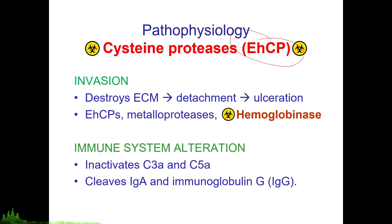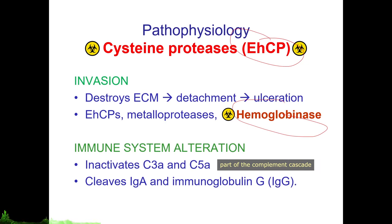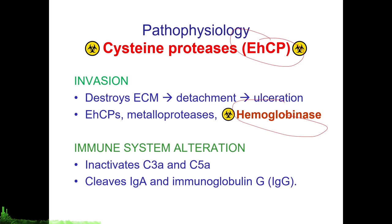The EHCPs together with other proteases — such as metalloproteases and hemoglobinase, a specific protease designed to ingest red blood cells — are responsible for eating through the intestinal mucosa. Metalloproteases degrade collagen type 1 and type 3 of the extracellular matrix. Cysteine proteases are also responsible for inactivating C3a and C5a, and also cleave mucosal IgA and IgG, enabling Entamoeba histolytica to succeed in its pathogenesis.